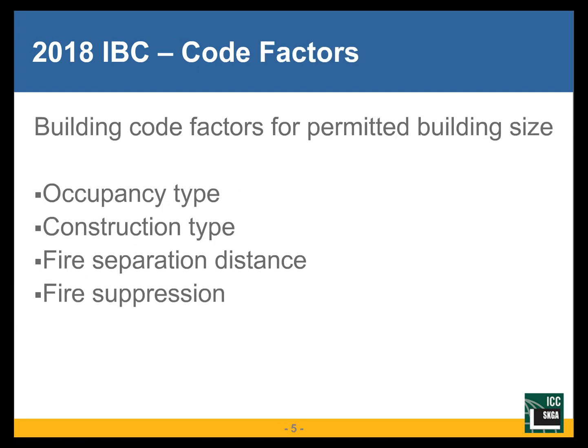When looking at the parts of the building code relevant to fire resistance, the key factors are: occupancy type, construction type, fire separation distances from adjacent properties, and any fire suppression placed in the building such as automatic sprinkler protection. These factors all play a part in how the code determines what kind of fire resistance ratings may be required for the particular building under consideration.